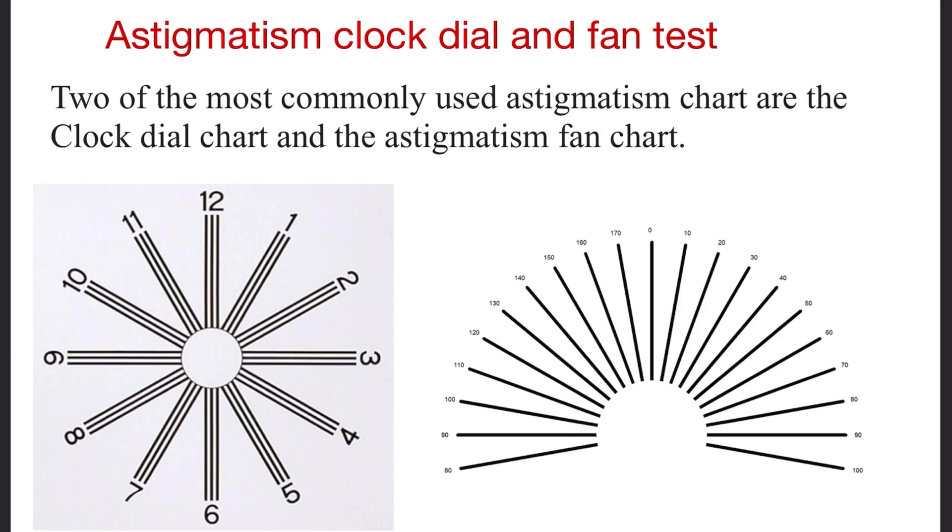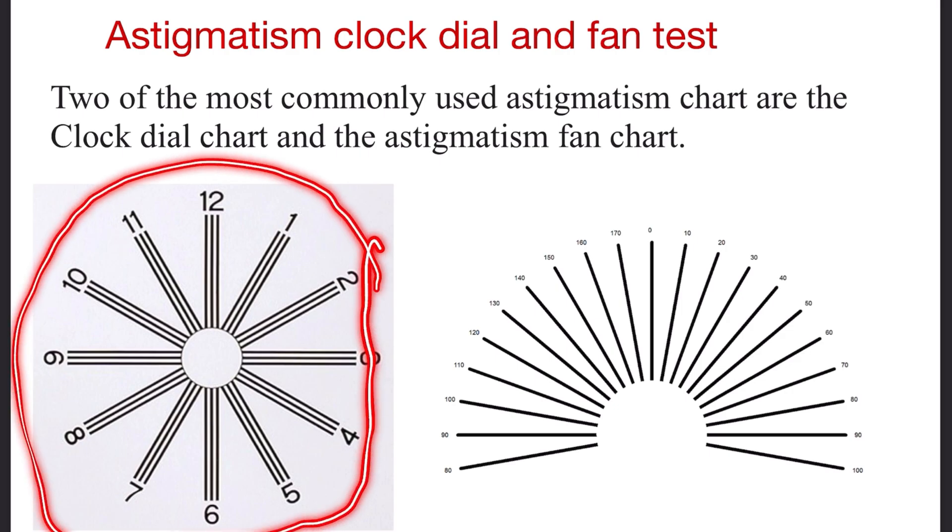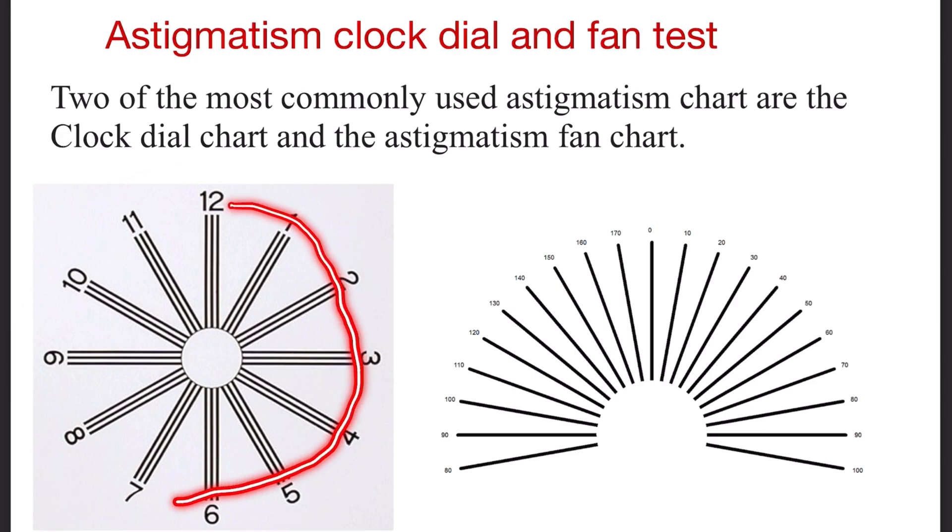The two most commonly used astigmatism charts are the clock dial chart and the astigmatic fan chart. The clock dial chart is so named because the numbers shown in the chart are similar to the numbers on the face of a clock.